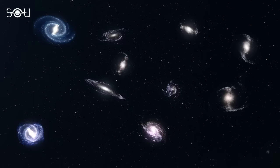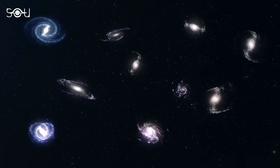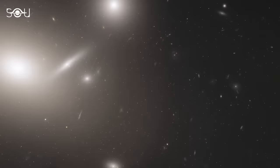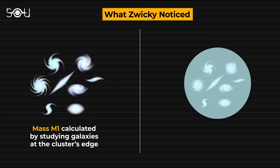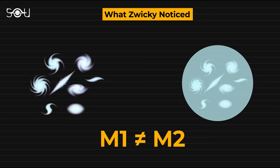He studied galaxy clusters and concluded that the observed mass of matter was not accounting for the total mass of the galaxy cluster found based on the motion of the galaxies held together by gravitational force. He discovered this discrepancy in the Coma Cluster. Zwicky first calculated the mass of the Coma Cluster by studying the galaxies at its edge, then compared it with the mass based on the brightness and number of galaxies in the cluster. The two values didn't match. As a result, he obtained evidence for an unseen type of matter, which he called dark matter.